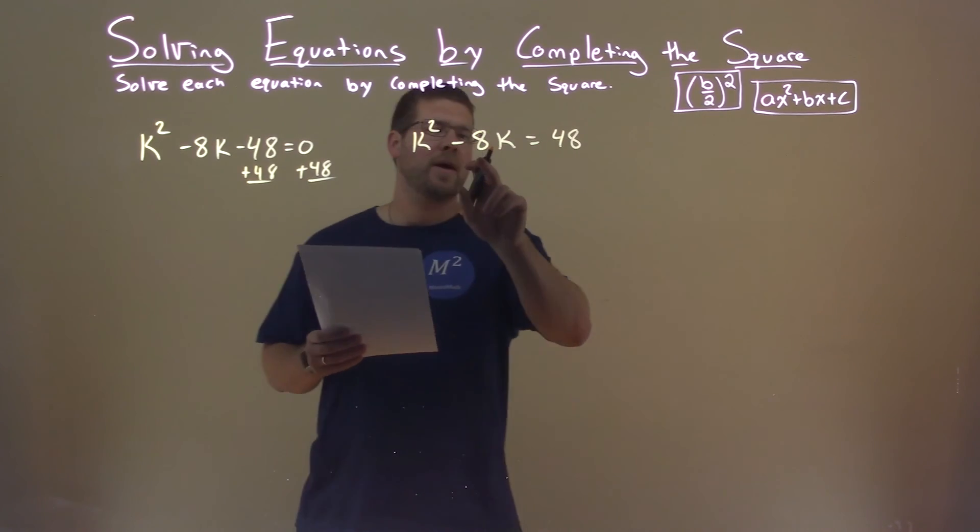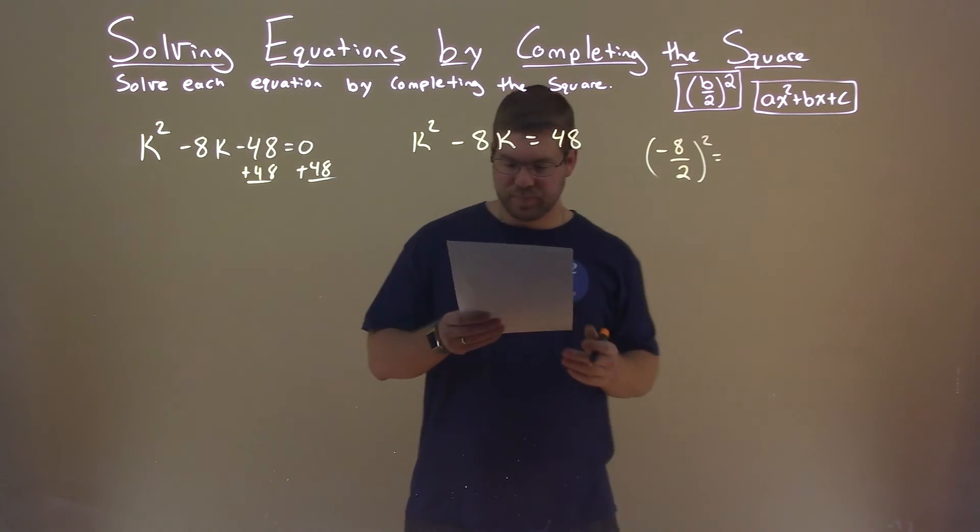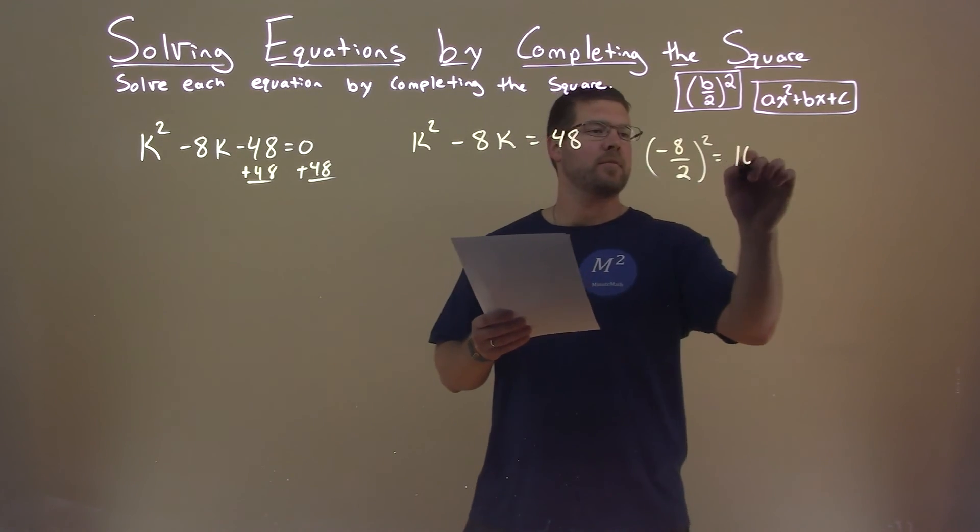Now with that, I'm also going to look at my b value, -8. Divide that by 2 and square it. That comes out to be 16.